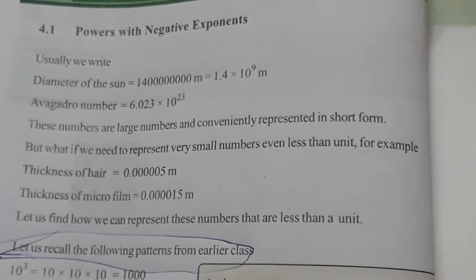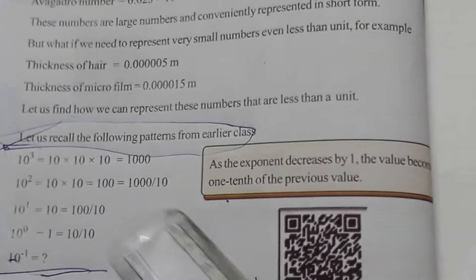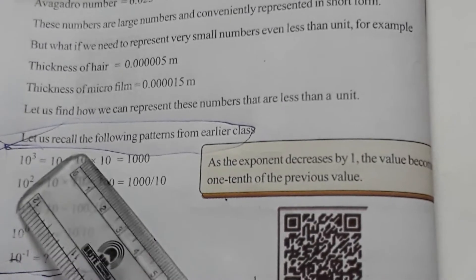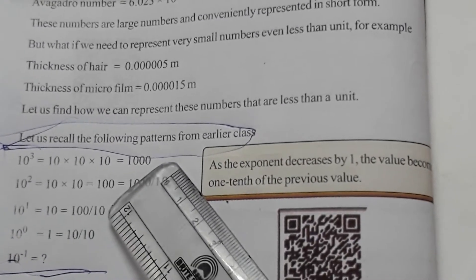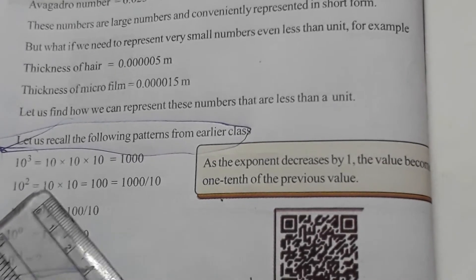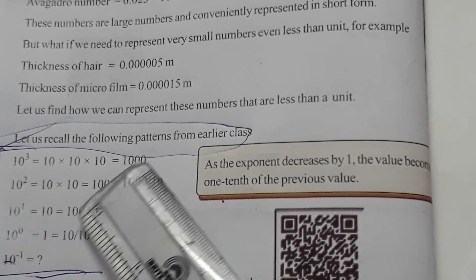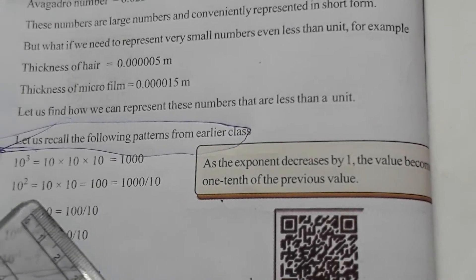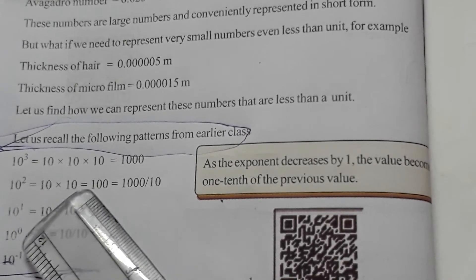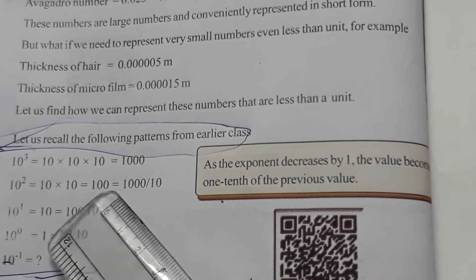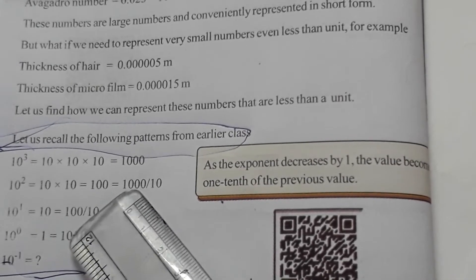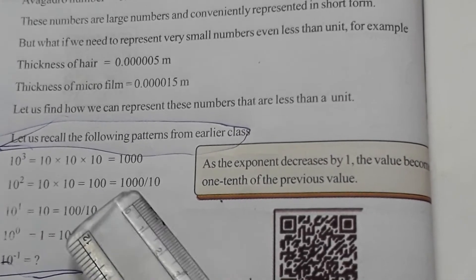Let us recall the following patterns from earlier classes. 10³ is equal to 10 × 10 × 10 is equal to 1000. 10² is equal to 10 × 10 is equal to 100. Alright, is equal to 1000 by 10, is equal to 100.